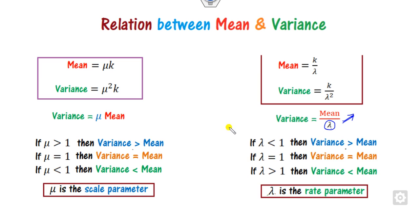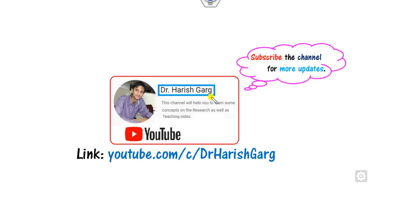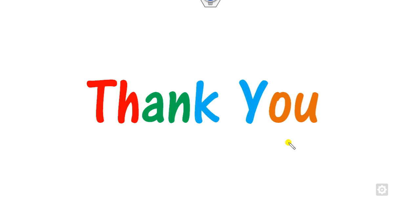This is all about the moment generating function and the mean and variance of the Erlang distribution. In our next class we will see how to find the characteristic function and other properties of this distribution. Until then, follow the link to find various related videos. Best of luck.